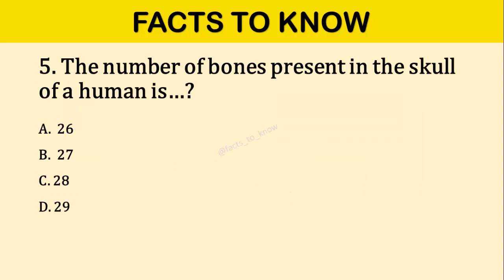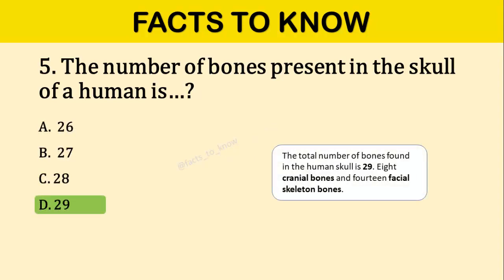Question number five: The number of bones present in the skull of a human is? The correct answer is option D: 29. There are 29 bones in the human skull — 8 cranial bones and 14 facial skeleton bones.